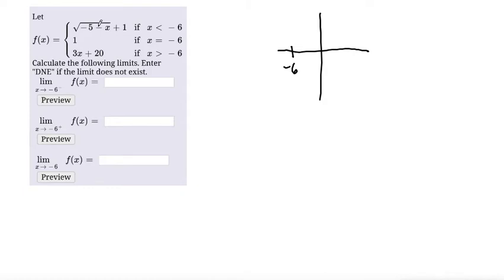So let's find the piece that is going less than -6. That's this one here. So since this is the piece that would be approaching -6 from the left hand side, we can try to just plug in -6 directly. And if it gives us a real number, then that would be our limit.